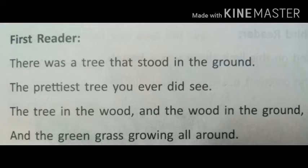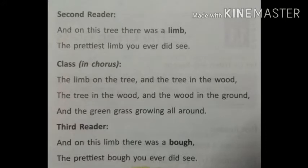Students, today we are going to read the poem 'The Green Grass.' Let's read the poem first. First reader: 'There was a tree that stood in the ground, the prettiest tree you ever did see, the tree in the wood in the ground, and the green grass growing all around.' In the poem, the first reader was saying that there was a tree in the jungle which was very beautiful, standing on the ground, with green grass growing around it.